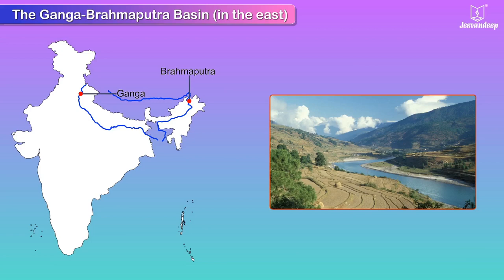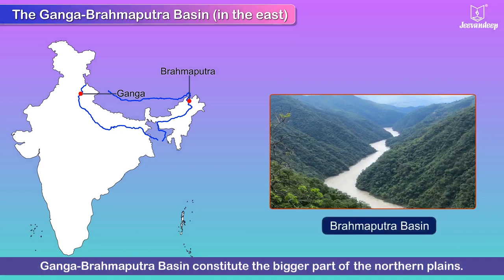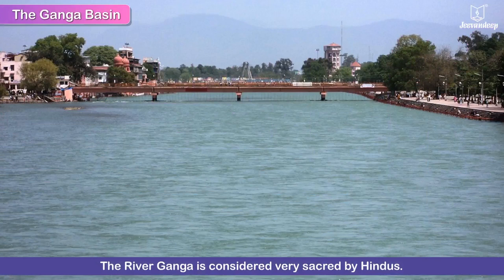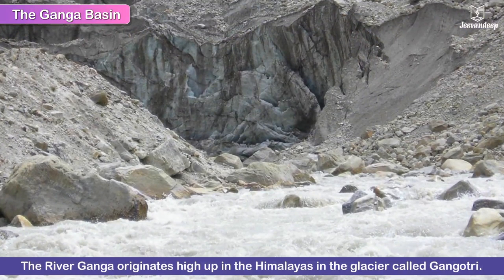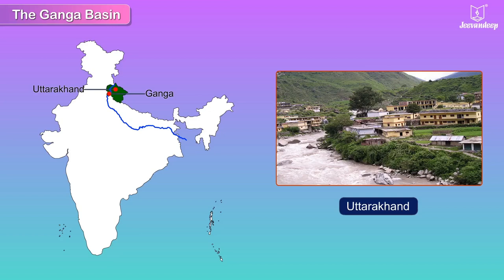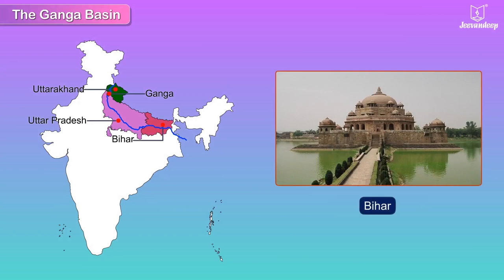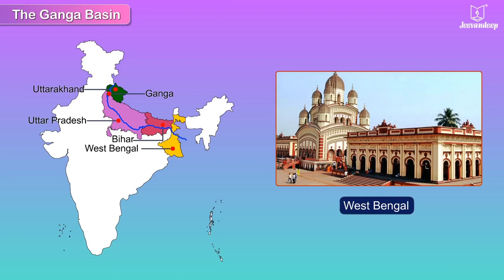The Ganga-Brahmaputra Basin in the east: the Ganga Basin and the Brahmaputra Basin constitute the bigger part of the northern plains. The river Ganga is considered very sacred by Hindus. It originates high up in the Himalayas in the glacier called Gangotri. The Ganga flows through Uttarakhand, Uttar Pradesh, Bihar, and West Bengal, thus forming the Ganga Basin.